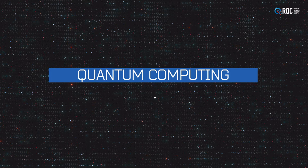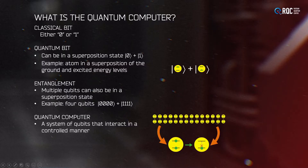If you are interested to learn more about quantum computing and its current status, you're welcome to read it. As you must have seen in popular literature, the difference between the quantum and classical computer is that while the unit of information in a classical computer is the bit, which can either take the value of 0 or 1, in a quantum computer, the main bit of information is the qubit, which can be in a superposition state of 0 plus 1.